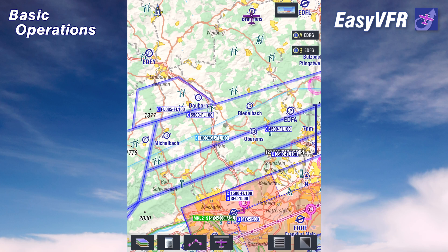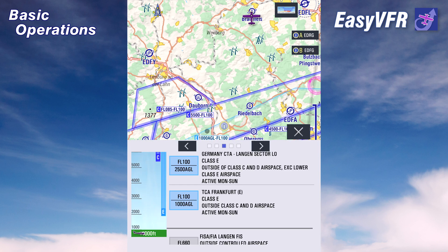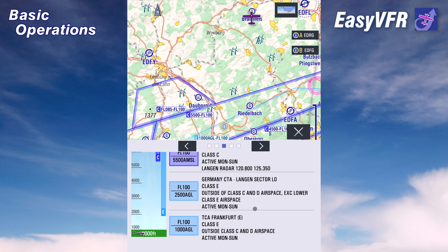Now you have seen how simple the basic operation in EasyVFR is: tap somewhere on the map, select the function you want to work with, and get your data.